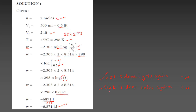There is a distinction between work done by the system and work done on the system. Work done by the system is negative — minus W. When work is applied on the system, for example during expansion, the sign is negative. So the work done here is negative.